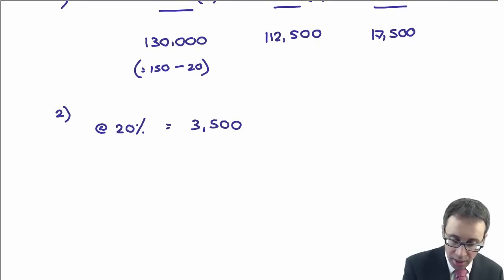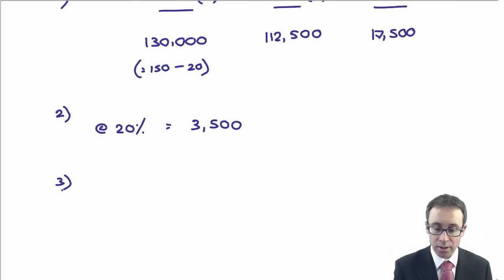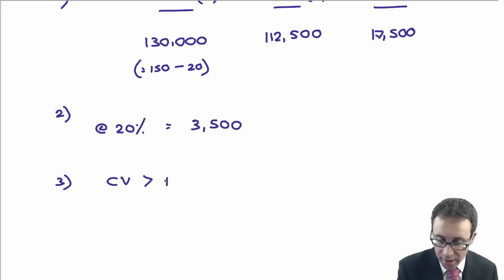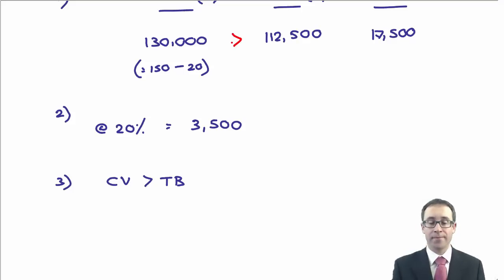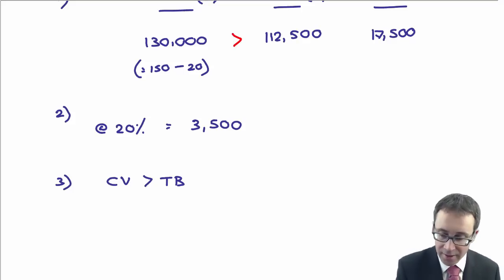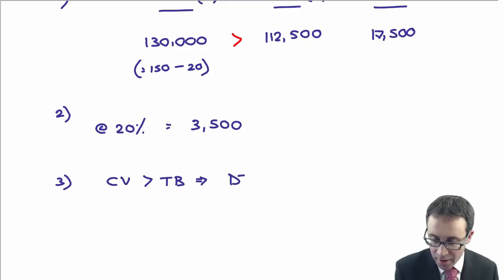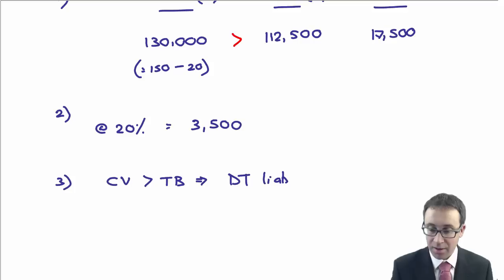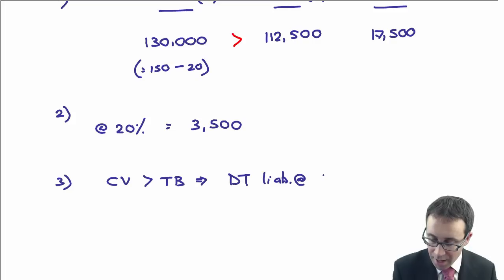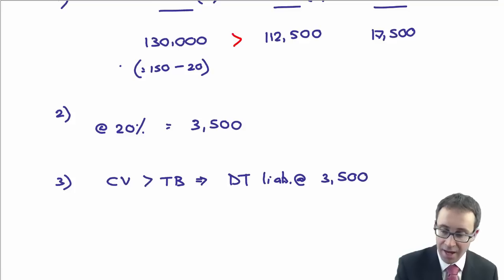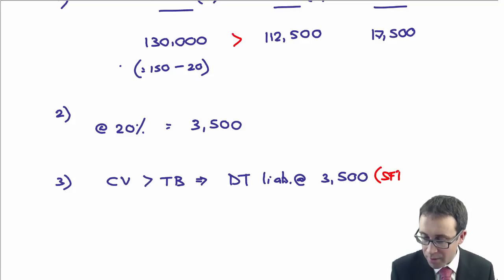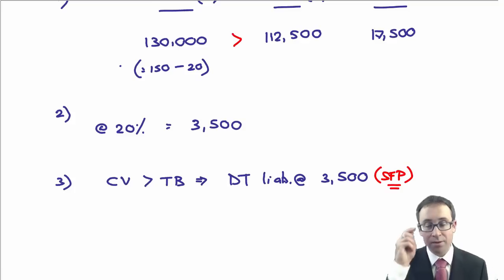Step three: the carrying value of $130,000 is greater than the tax base of $112,500, so we have a deferred tax liability. That deferred tax liability of $3,500 is the figure that appears on the statement of financial position.